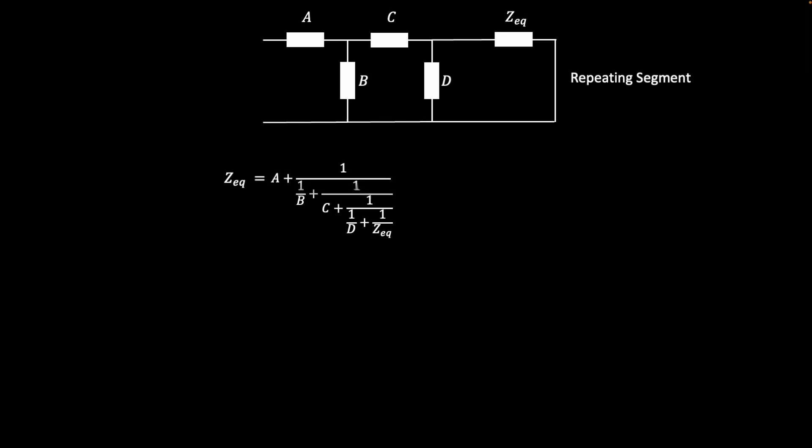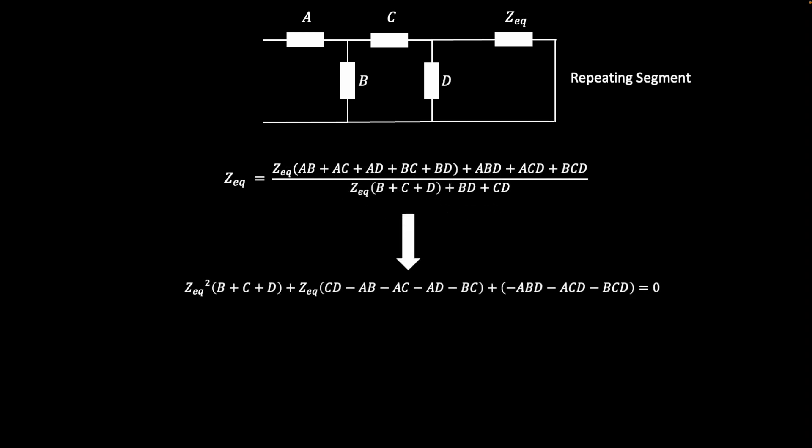The fraction can now be collapsed one level at a time starting at the bottom and continuing until there is just a single numerator and denominator. Rearranging these terms gives a quadratic equation with the total impedance as the variable. In this form, the quadratic formula can be used to find the total impedance for the entire infinite circuit. This method can be used to find the total impedance for any repeating infinite ladder network and approximates the impedance for ladder networks that are finite but repeat many times.